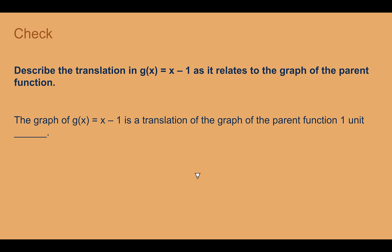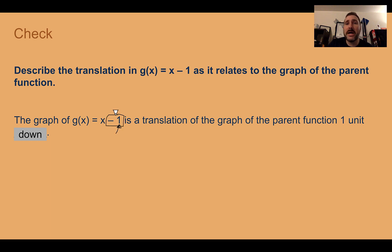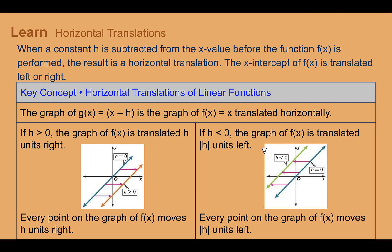Check your understanding: describe the translation shown as it relates to the parent function. The answer is that x − 1 is a translation of the graph one unit down. The one tells us how many units, and the minus tells us to go down.